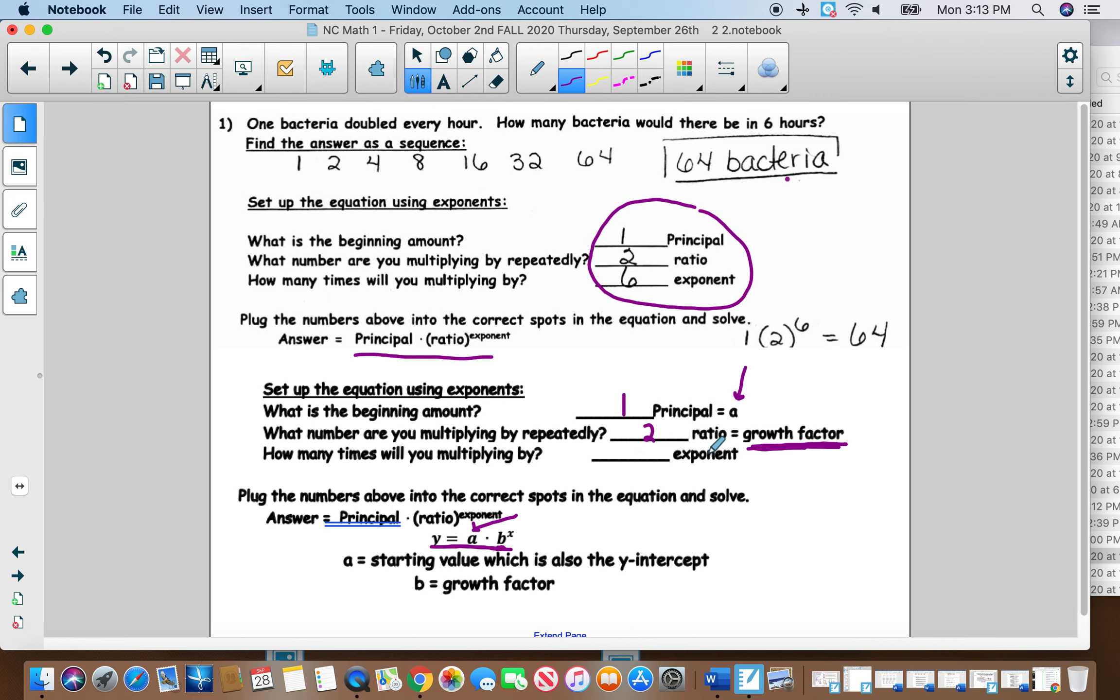And the exponent, it's still an exponent. A lot of times it might be considered like time. Like in this particular problem, it is considered time when we talk about compound interest and stuff, which we will do very soon, that exponent will always be the T. So you're still basically using the same thing. You're just transferring it into this. So then you would still do 1 times 2 to the 6, and you'd still get 64.